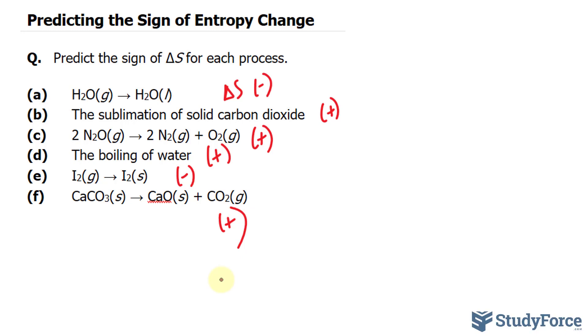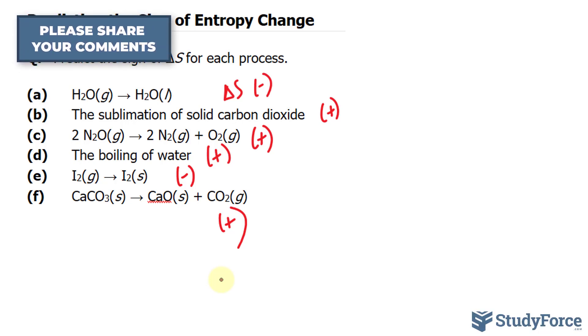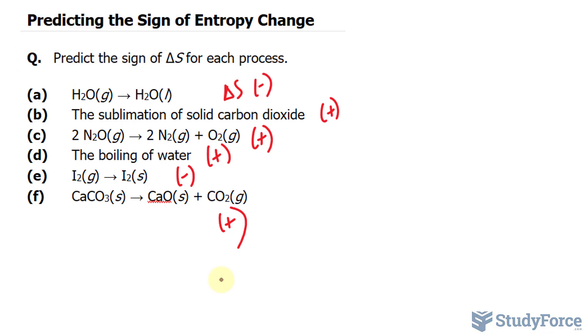The take-home message here is that if you're going from a gas to a liquid or a solid, entropy decreases and you make it negative. If it's going from a solid to a liquid or a liquid to a gas or even sublimation, then entropy is increasing and you make it positive. And there you have it—that is how to predict the sign of entropy change.